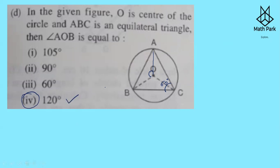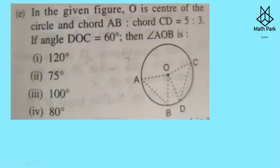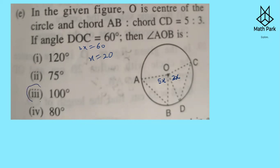Question 5 (last MCQ of 17B): Chord AB to chord CD is in the ratio 5 to 3, so the central angles are also in ratio 5 to 3. Let those angles be 5x and 3x. Given angle DOC = 60 degrees, we have 3x = 60, so x = 20 degrees. Therefore angle AOB = 5x = 5 × 20 = 100 degrees.